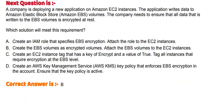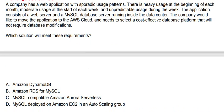The correct answer is Option B. Next question: A company has a web application with sporadic usage patterns. There is heavy usage at the beginning of each month, moderate usage at the start of each week, and unpredictable usage during the week. The application consists of a web server and a MySQL database server running inside a data center. The company would like to move the application to the AWS cloud and needs to select a cost-effective database platform that will not require database notifications. Which solution will meet these requirements? Option A: Amazon DynamoDB. Option B: Amazon RDS for MySQL. Option C: MySQL-compatible Amazon Aurora Serverless. Option D: MySQL deployed on Amazon EC2 in an Auto Scaling group.